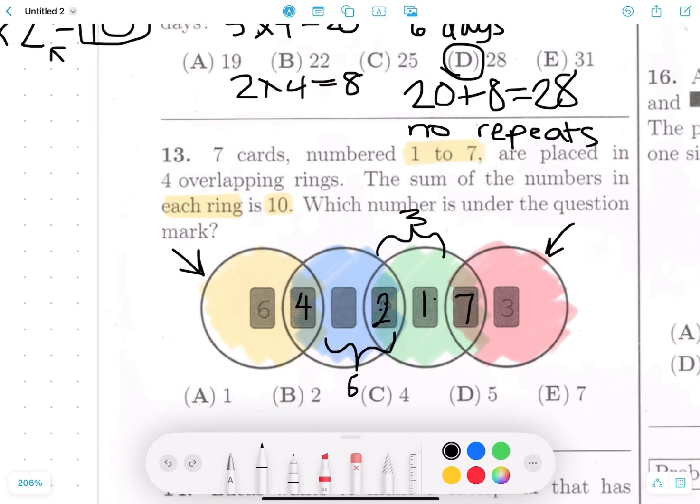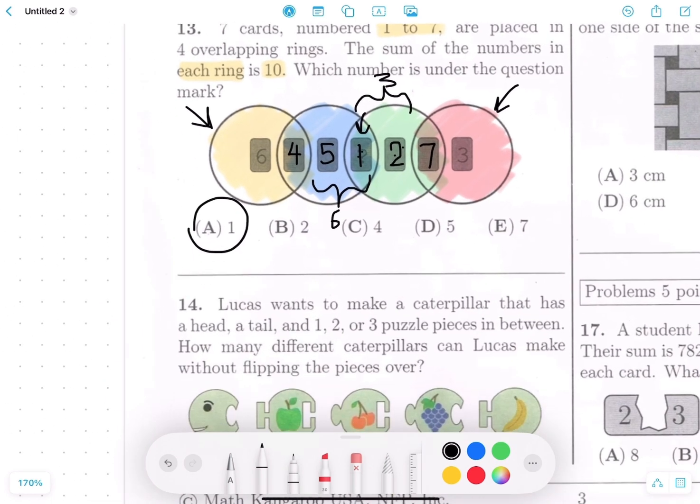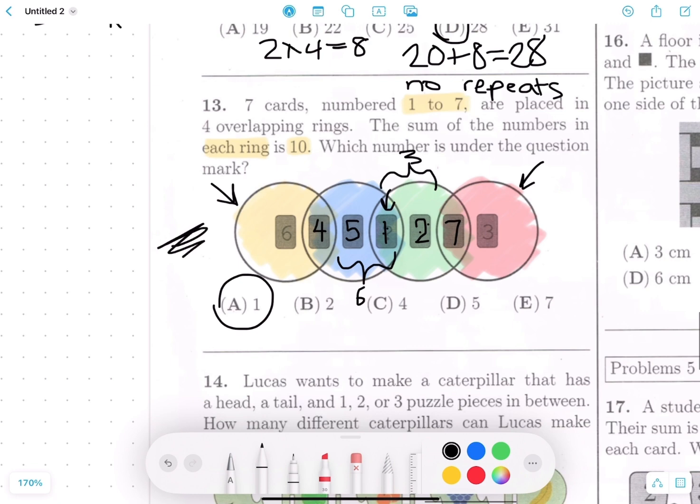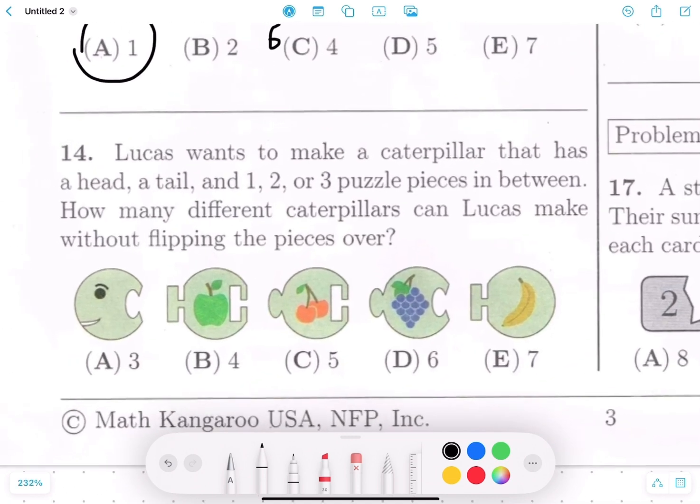So, oops, we are going to delete that and try putting one here and two here. Well, then four plus one is five. And we need a five here to make it ten. So check it over. No repeats? No repeats. So which number is under the question mark, which is this one? The answer is A, one. Remember, in problems like this, it's very important to read and reread the problem. Okay.